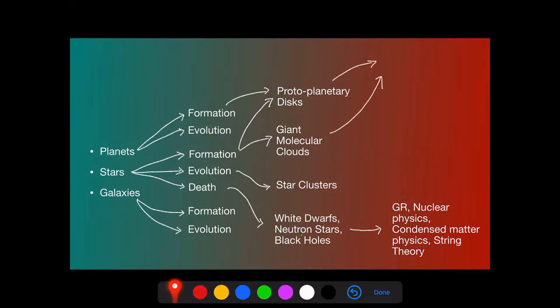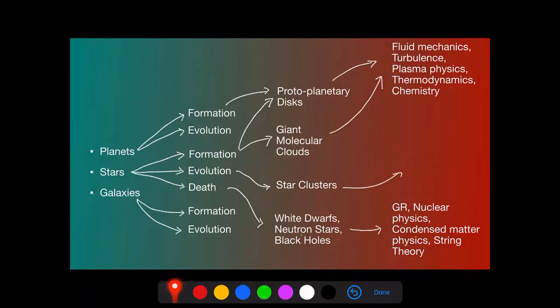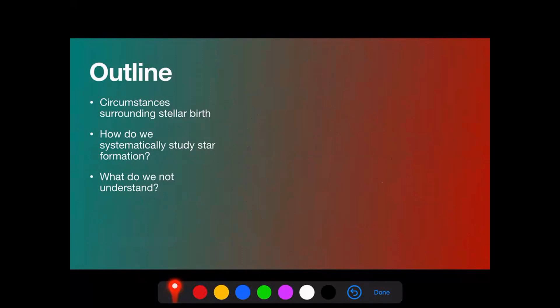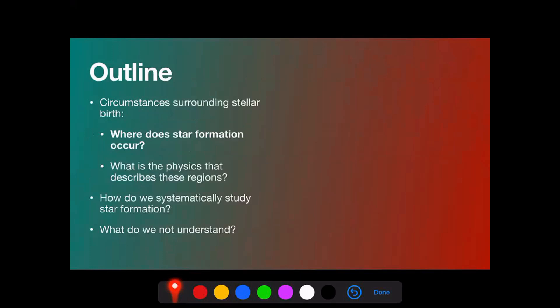Protoplanetary disks and molecular clouds are fantastic laboratories because of their extreme environments — they let us study fluid mechanics, turbulence, plasma physics, thermodynamics, and chemistry. Star systems like planetary systems and solar systems can be used to study n-body dynamics, celestial mechanics, and chaos. My talk today is in three main sections: first, understanding the circumstances surrounding stellar birth; next, how we systematically study star formation; and finally, what we don't yet understand — including some open questions people are still working on.